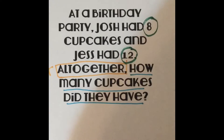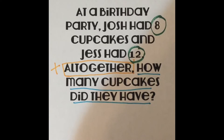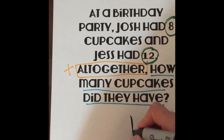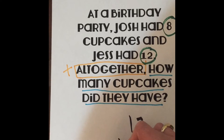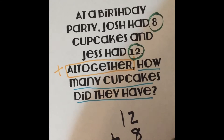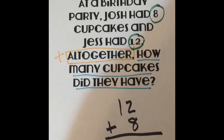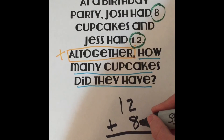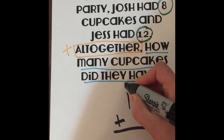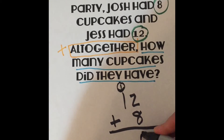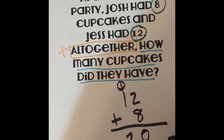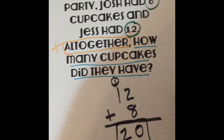Next we want to evaluate, and I know that the only step I have to do is add. So I'm going to take my two numbers: 12 plus 8 — that is my evaluate step. Now to solve the problem: 12 plus 8. We know that 2 plus 8 is 10, carry and circle your 1, 1 plus 1 is 2, so we know that they had 20 cupcakes all together.